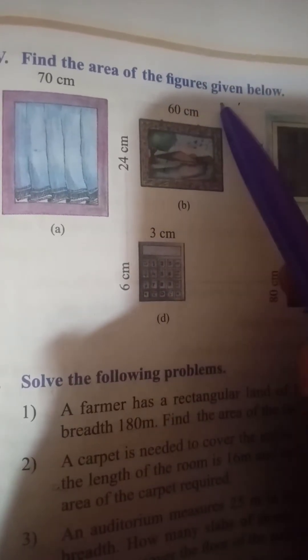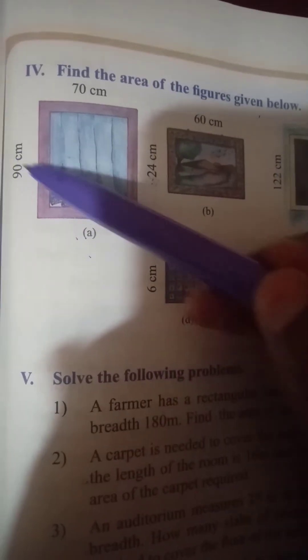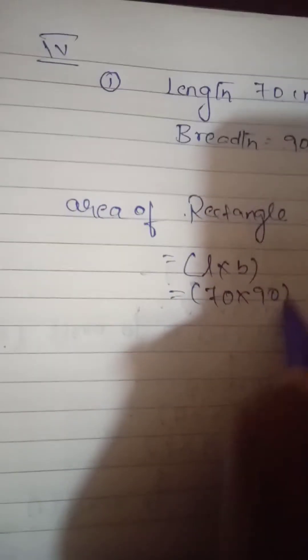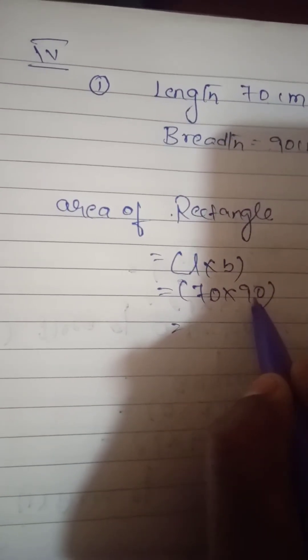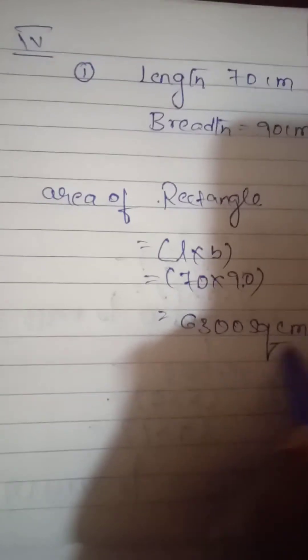Find the area of the figures given below. Figure: length is 70 centimeters and breadth is 90 centimeters. Area is always in square units. Solution: area of rectangle equals length into breadth equals 17 into 90 equals 6,300 square centimeters.